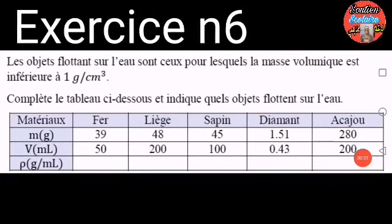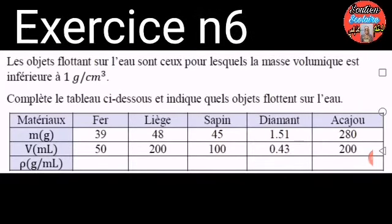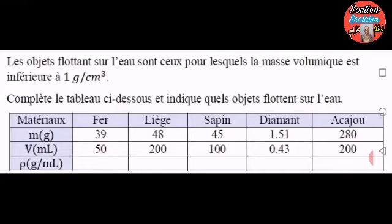Exercice numéro 6. Les objets flottant sur l'eau sont ceux pour lesquels la masse volumique est inférieure à 1 gramme par centimètre cube. Complète le tableau ci-dessous et indique quels objets flottent sur l'eau. Matériaux : fer, liège, sapin, diamant, acajou.